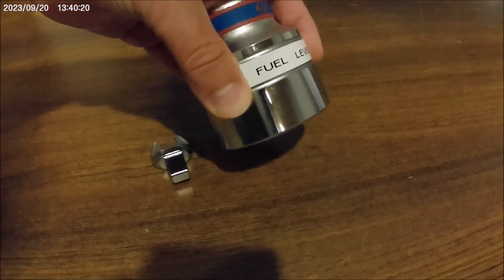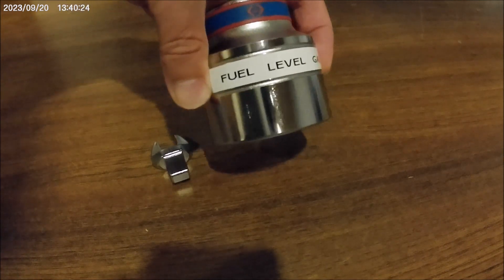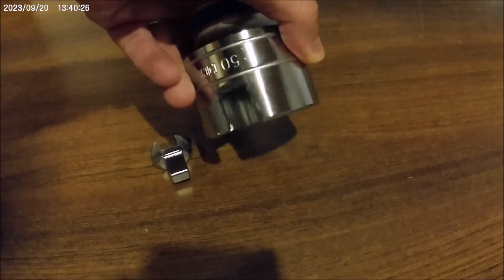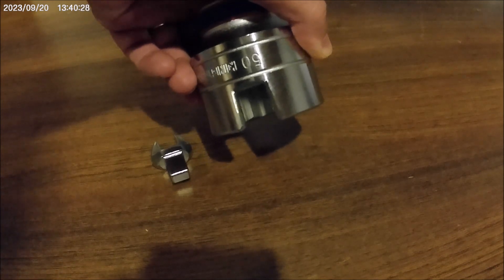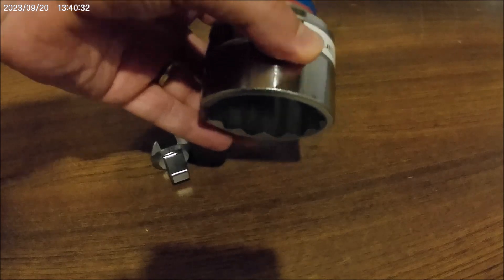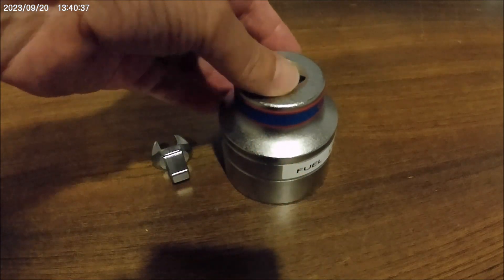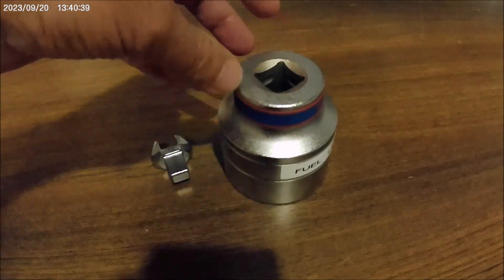This second wrench was modified for the Ducati Multistrada fuel level gauge. It was cut due to the cabling, but frankly speaking it's a bit oversized and quite heavy. The tightening torque for the gauge ring is only 8 newton meters.